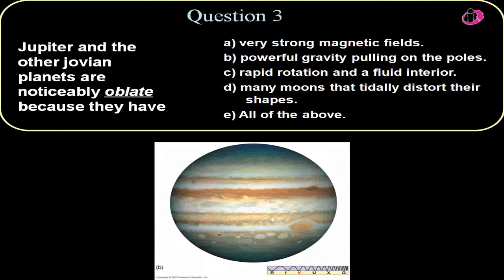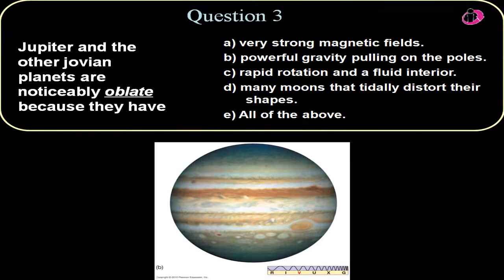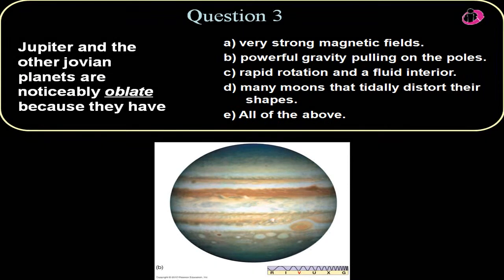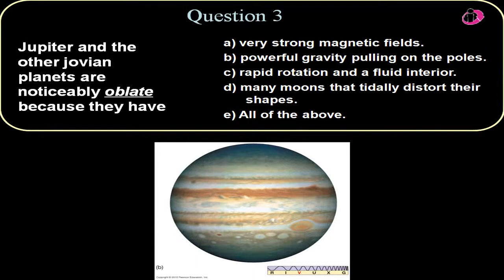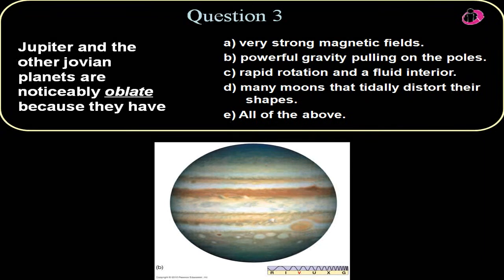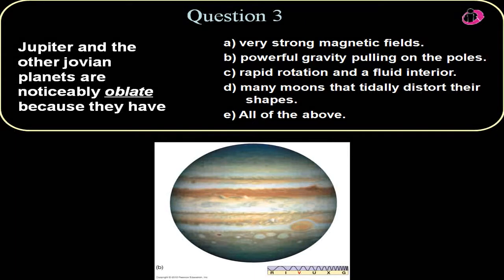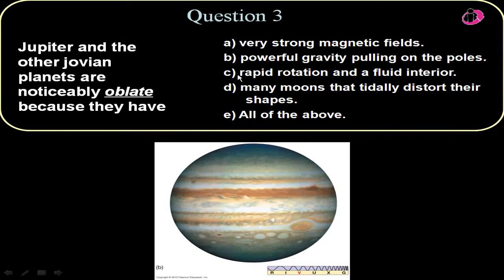Here's question number three. Jupiter and the other Jovian plants are noticeably oblate because they have. Well, oblate means that they're kind of egg-like shaped. Their diameter is shorter between the poles than it is at the equator. It's kind of pronounced out here. And the reason is because of the rapid rotation. The centrifugal force of rotating faster has pushed the gas out more and made the planets appear oblate. And hence the answer would be C, rapid rotation and a fluid interior.